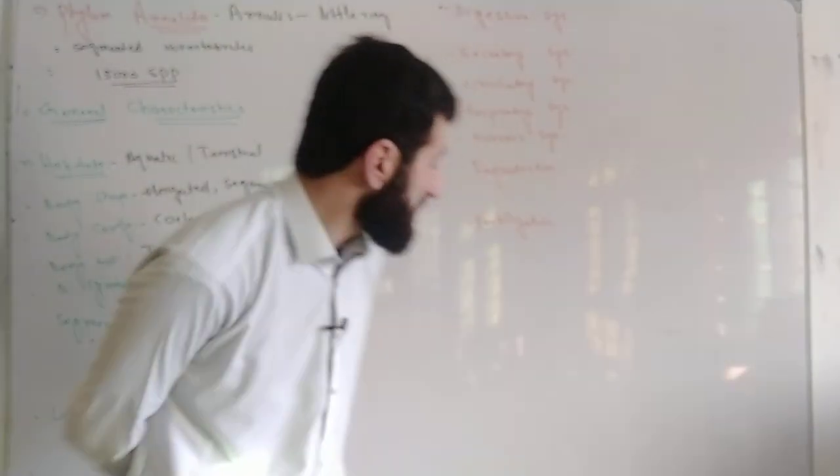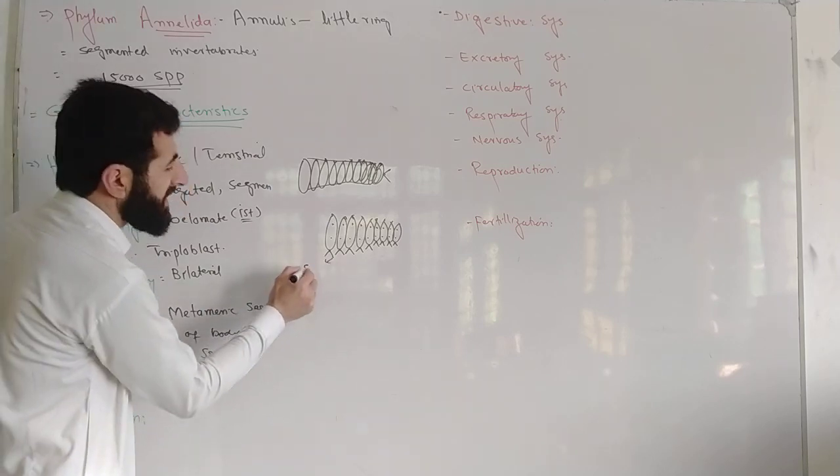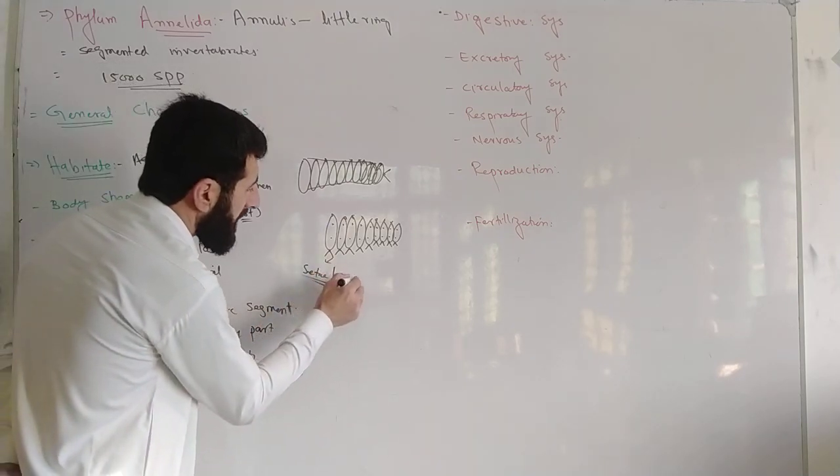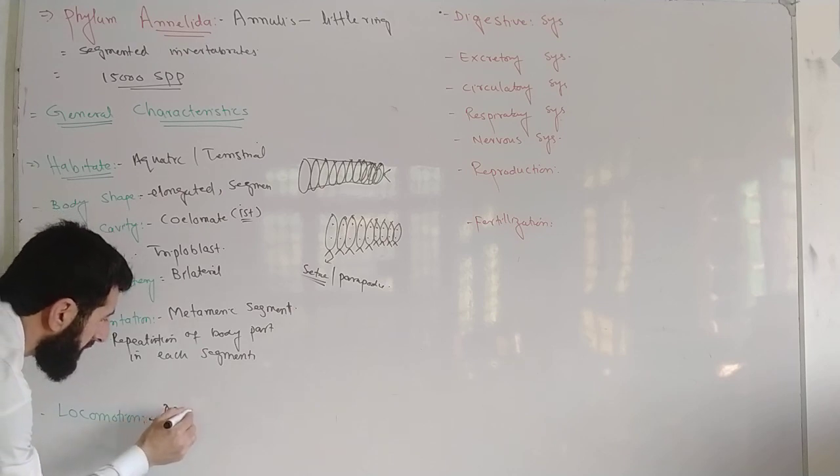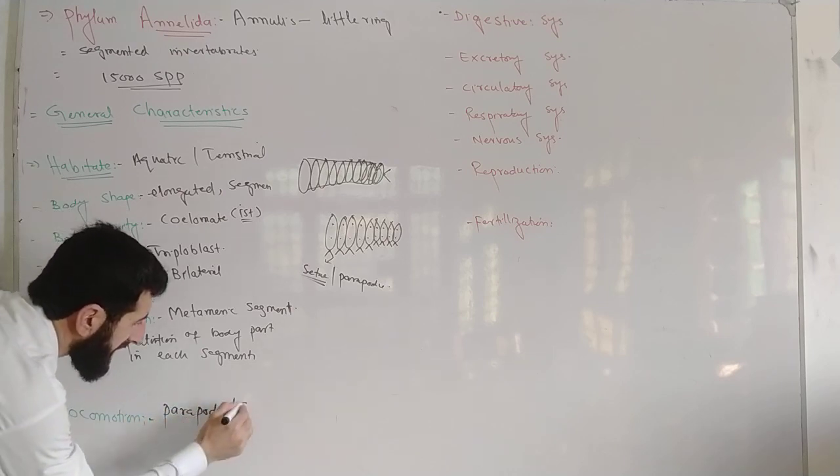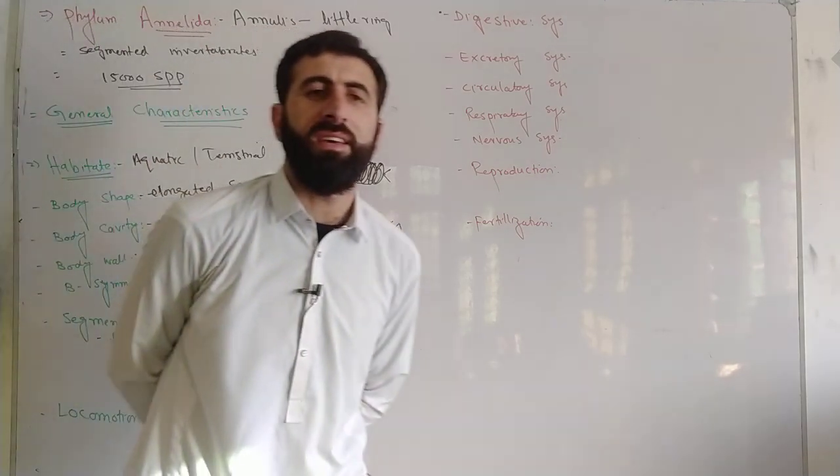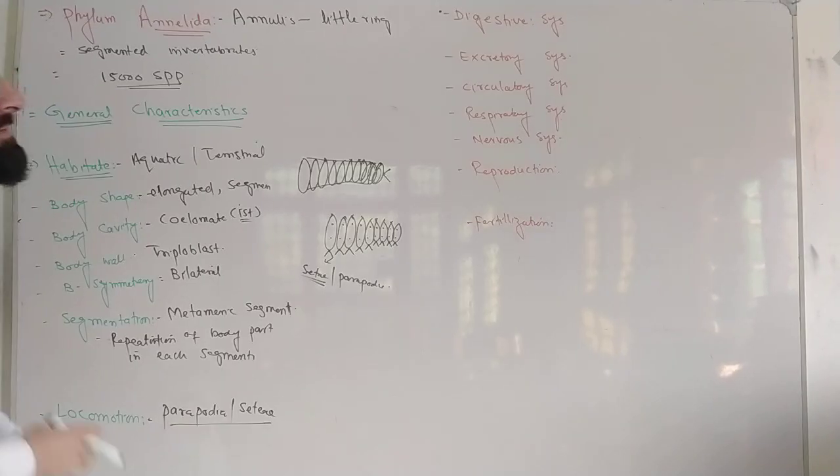The segmentation is metameric segmentation. It contains this bristle called setae. These are the organs of locomotion. Besides setae, parapodia are also organs of locomotion. Parapodia or setae, both names can be used. In some organisms there are no parapodia, they move by muscle contraction and relaxation.